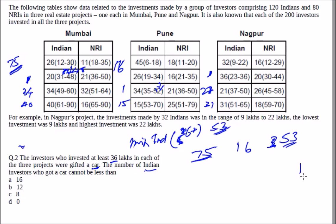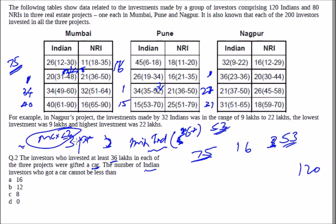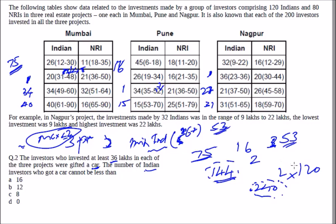There are 120 people total, and we want to avoid as many as possible investing in all three projects — we want to maximize people investing in only up to two projects. The total instances across the three cities are 75 + 16 + 53 = 144. With 120 people, even if everyone invests in two projects, we can accommodate up to 240 instances. So all 144 instances can be distributed across just one or two projects — you don't need anyone investing in all three. Therefore, the minimum number of investors who got a car is zero.